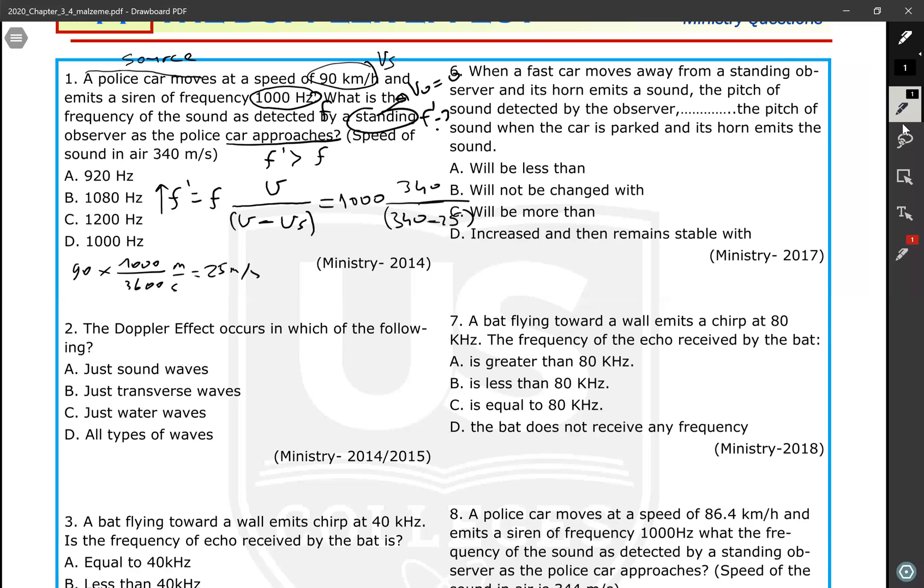So right here, negative 25. Let's calculate it: 1000 is original frequency multiplied by speed of sound 340 divided by bracket, 340 minus 25 which is 315. 340 divided by 315, so it's going to be 1080. So choice B is the correct answer.